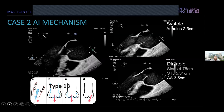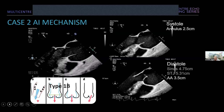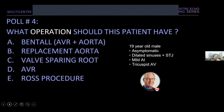Poll number four: what operation should this patient have? Options include valve sparing, Bentall, replacement of ascending aorta, or Ross procedure.